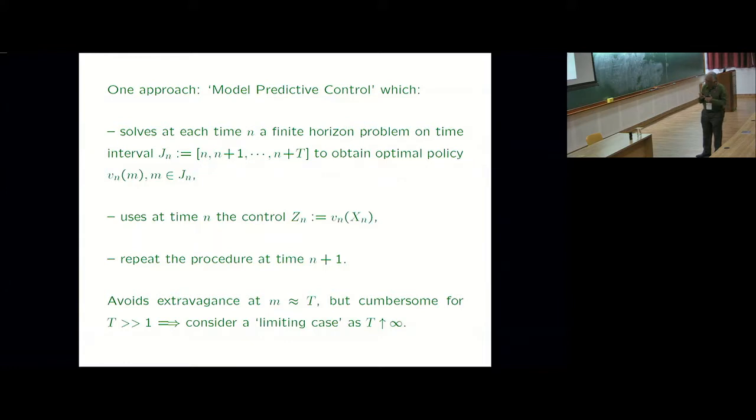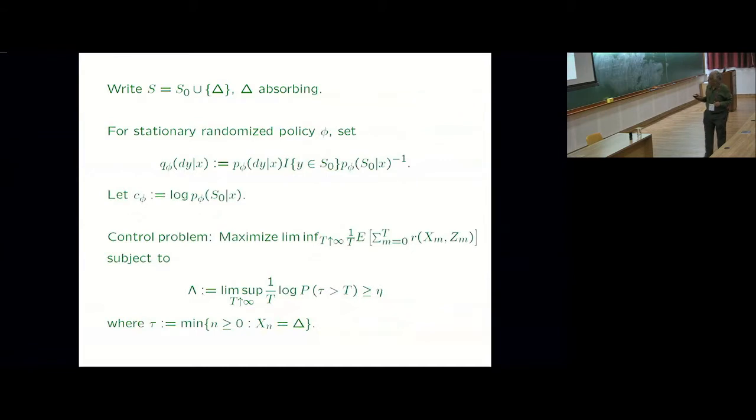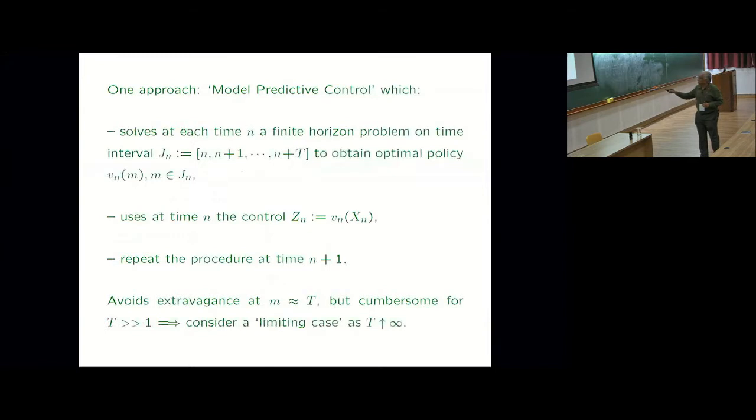What they do is just at time zero, you just use immediate control. At next time you resolve the problem. 1st January I solve the problem and use the control of 1st January. 2nd January I solve the problem again from 2nd January 2019 to 1st January 2020. Use the first control again, keep moving that window. This has been successfully used in kind of self-driven autonomous vehicles, etc. But it's painful to calculate as you might guess.